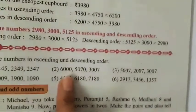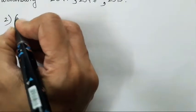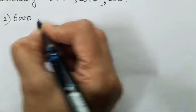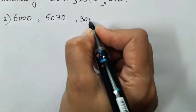Now next number is going to be this number. Again this number is very tricky. So I will show you how to check which is the ascending order. So first is 6000, 5070, 3007.